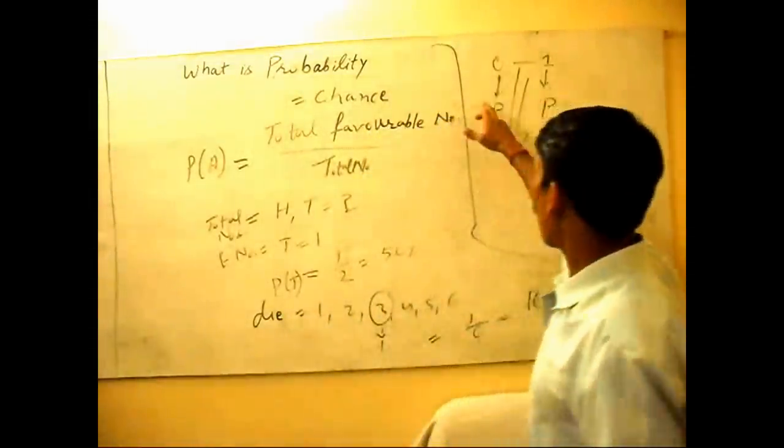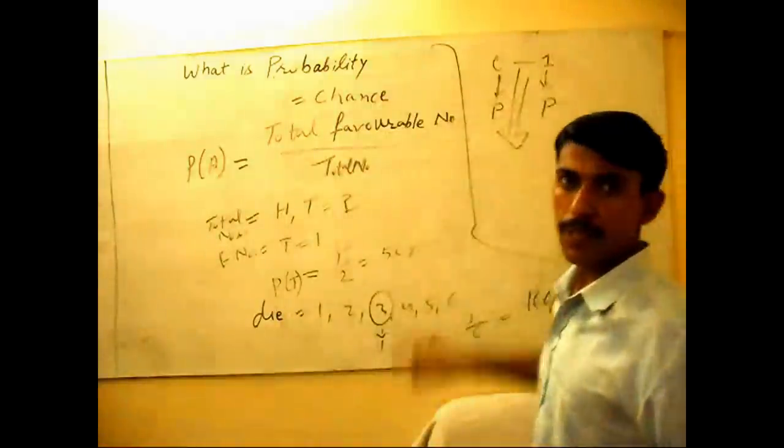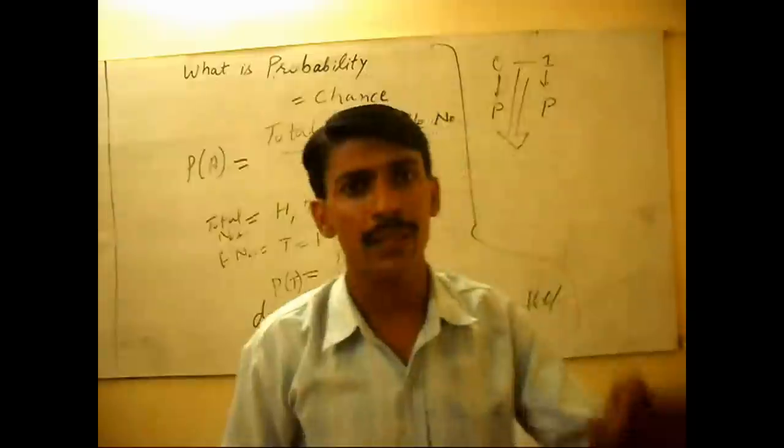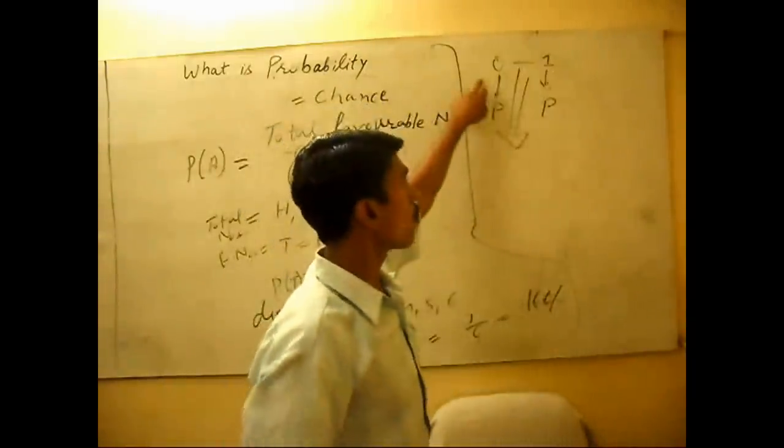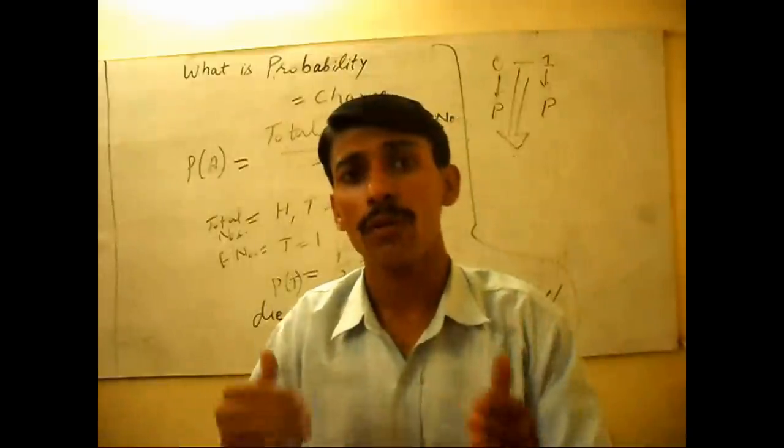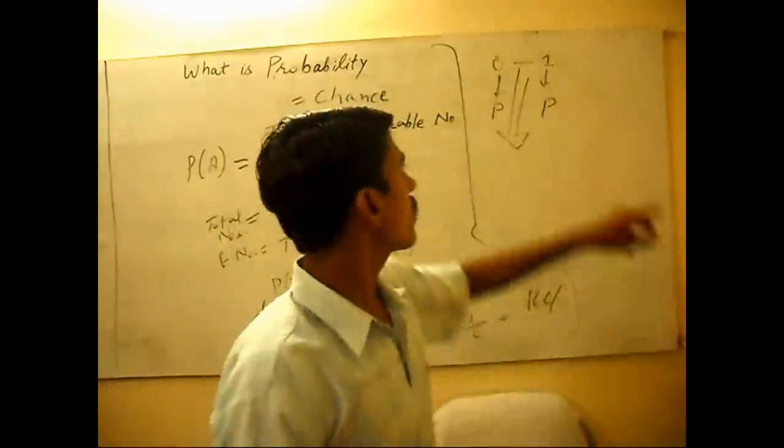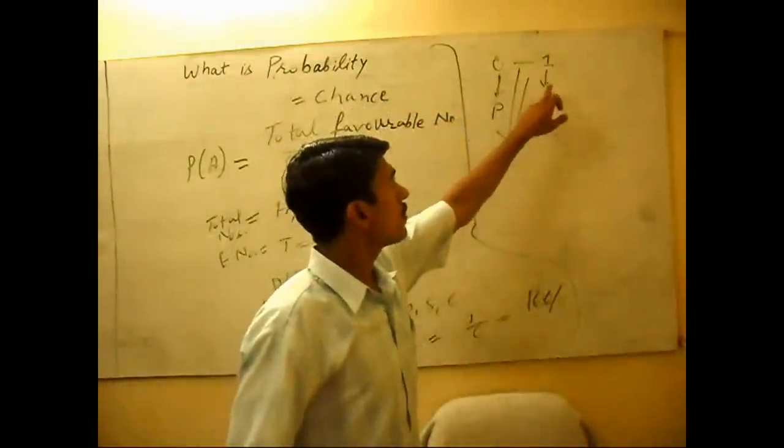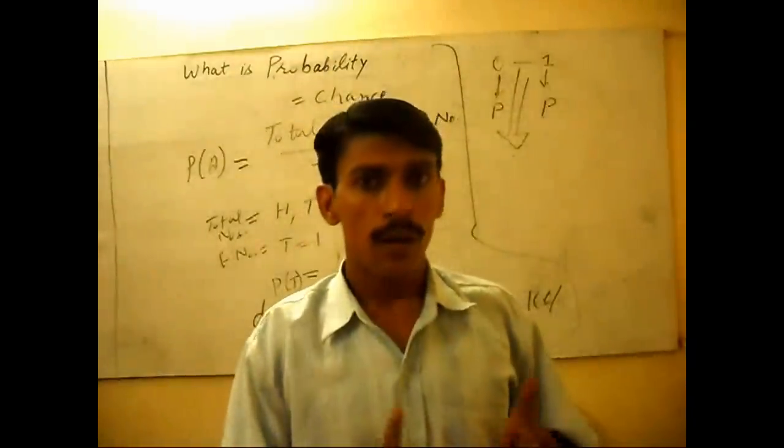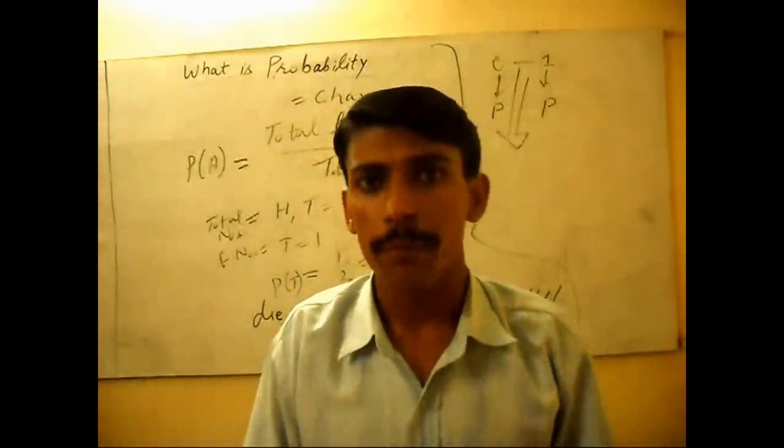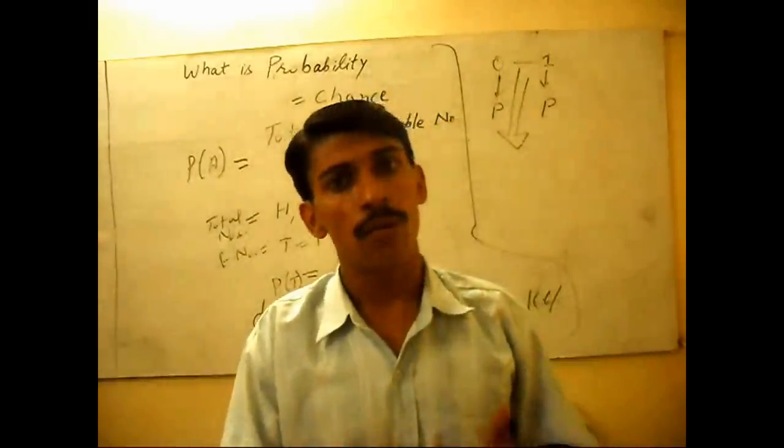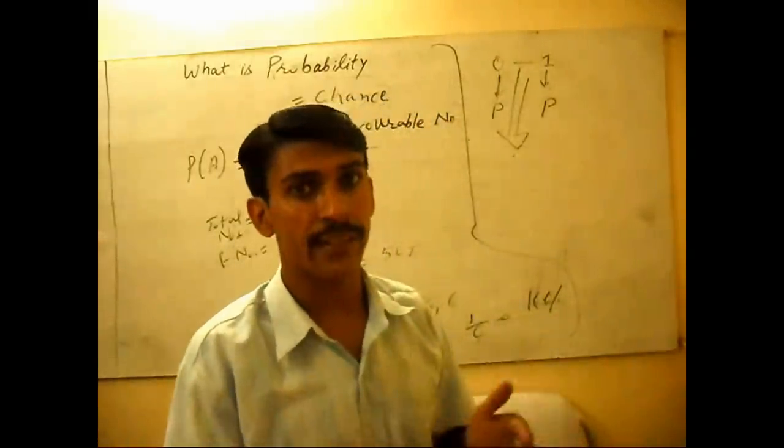Probability is always between zero and one. If there is no possibility of any happening, then probability will be zero. If there is 100% sure of happening any event or not happening any event, then probability is one. Probability may be less than one or more than zero when we calculate it.